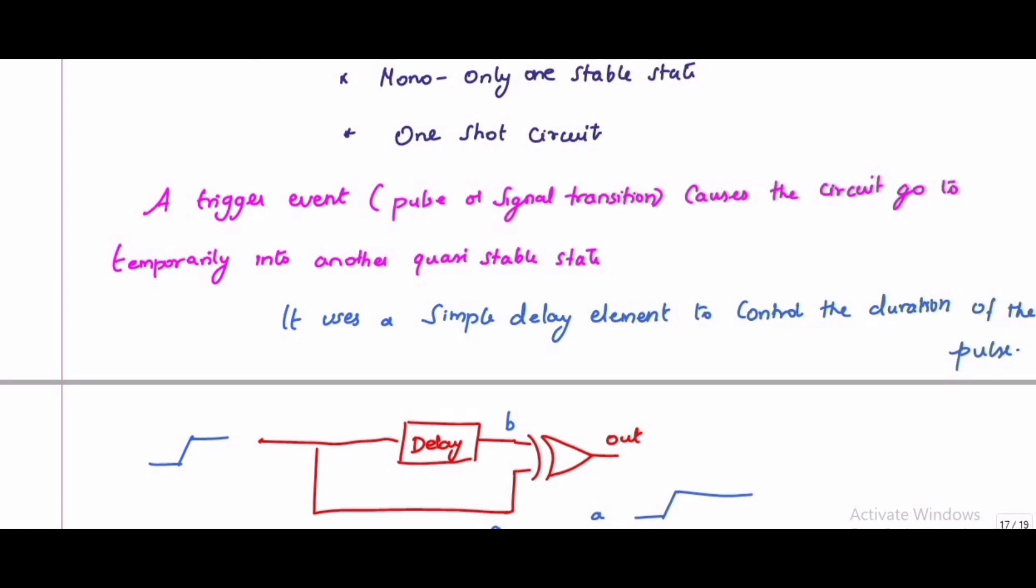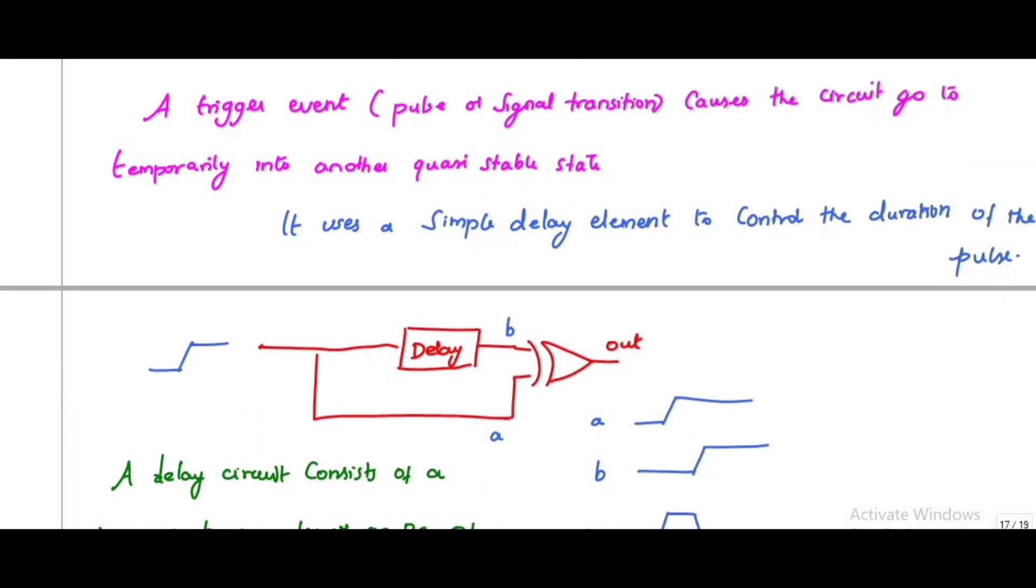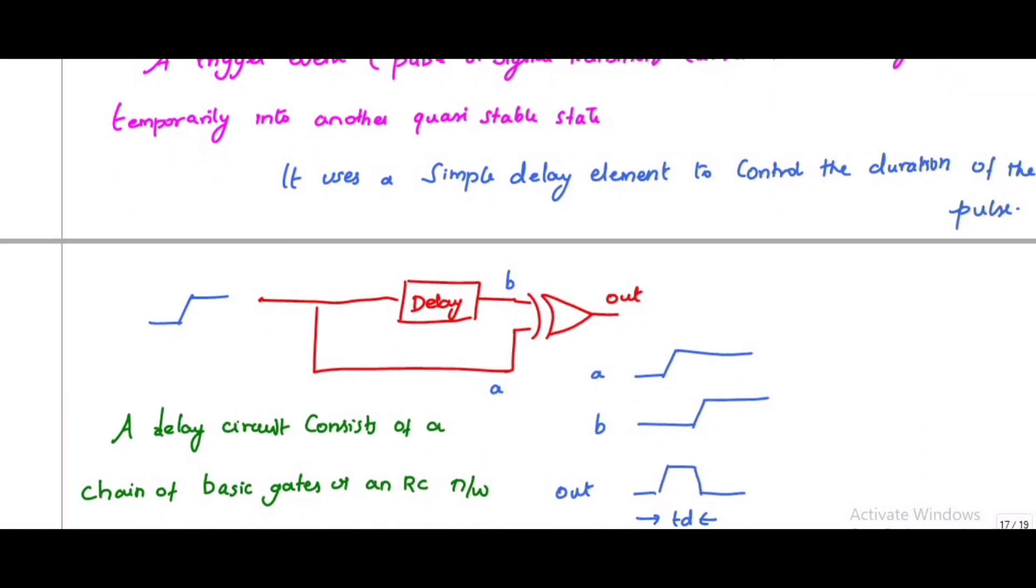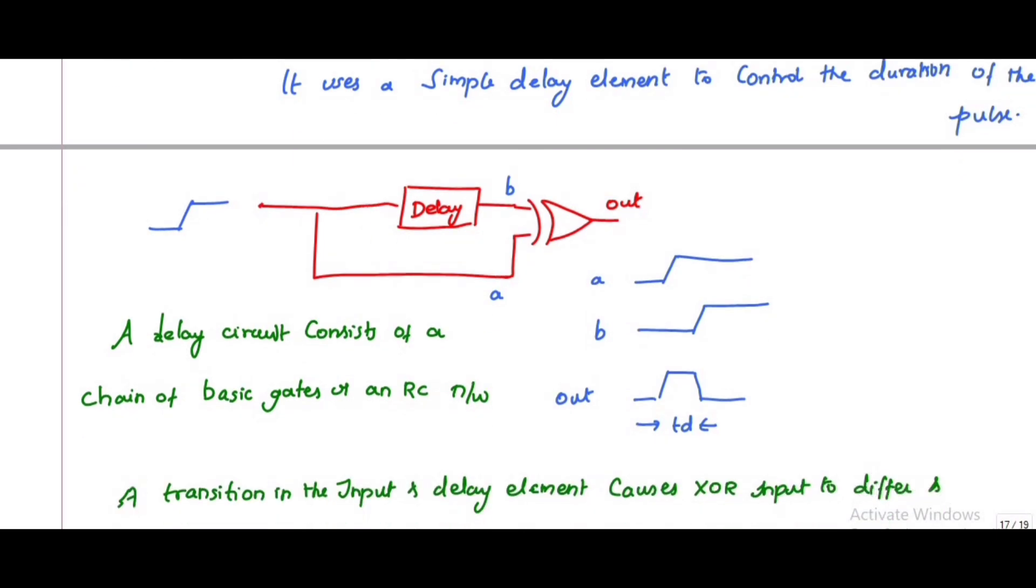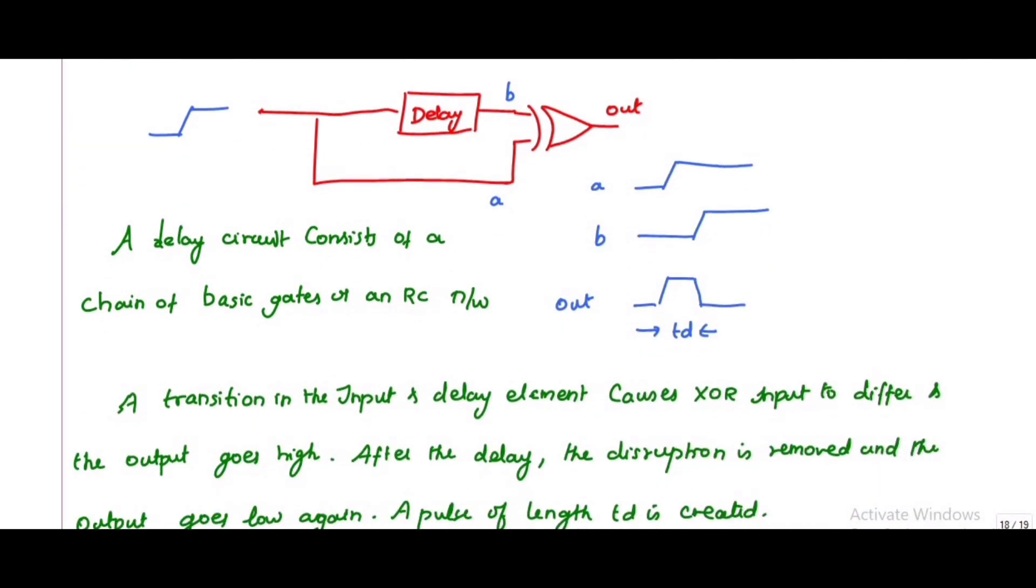It uses a simple delay element to control the duration of the pulses. This is a block diagram of the monostable sequential circuit. It consists of a delay and a pulse. The input signal has a transition from 0 to 1.